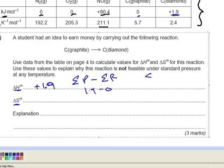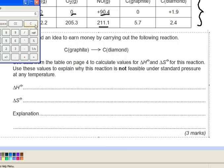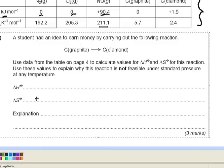Now let's look at delta S. Again, it's the sum of delta S for the products minus the sum of delta S for the reactants. The product (diamond) is 2.4, and I need to subtract the reactant (graphite) which is 5.7. I always suggest using a calculator for this — it's easy to make an arithmetic error and not worth losing marks. The result is minus 3.3, so delta S equals minus 3.3 J/K/mol, and enthalpy of formation is positive 1.9 kJ/mol.